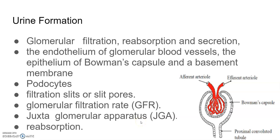The juxtaglomerular apparatus is a special sensitive region formed by cellular modifications in the distal convoluted tubule and the afferent arteriole at that location. A fall in GFR can activate juxtaglomerular cells to release renin, which stimulates glomerular blood flow and restores the GFR back to normal.